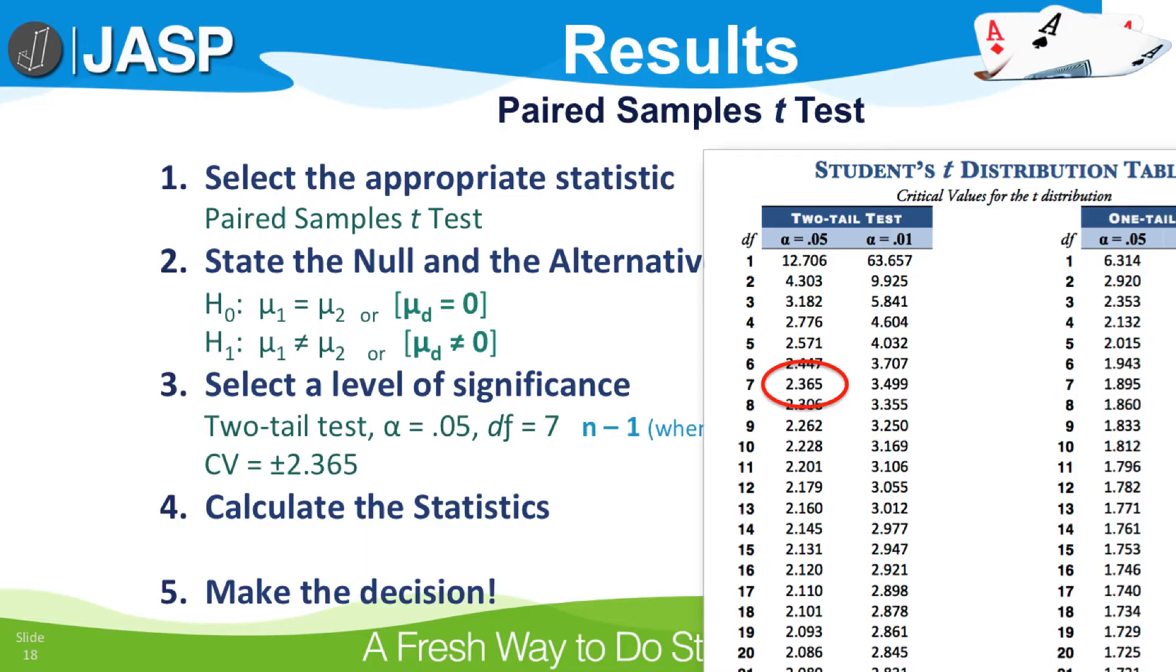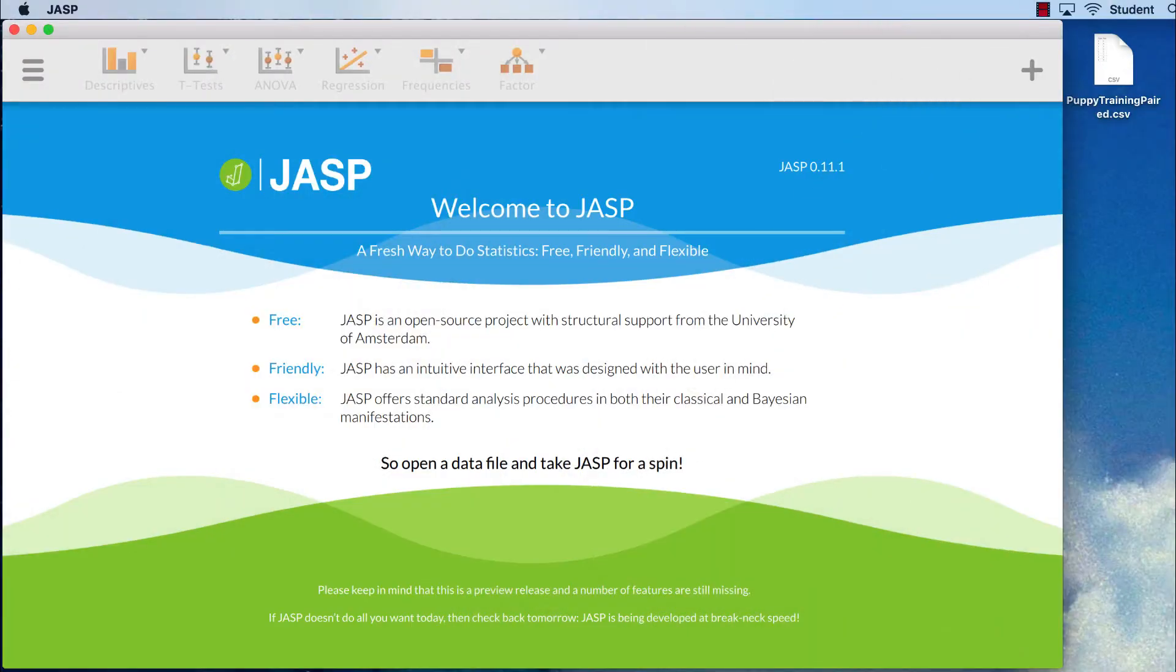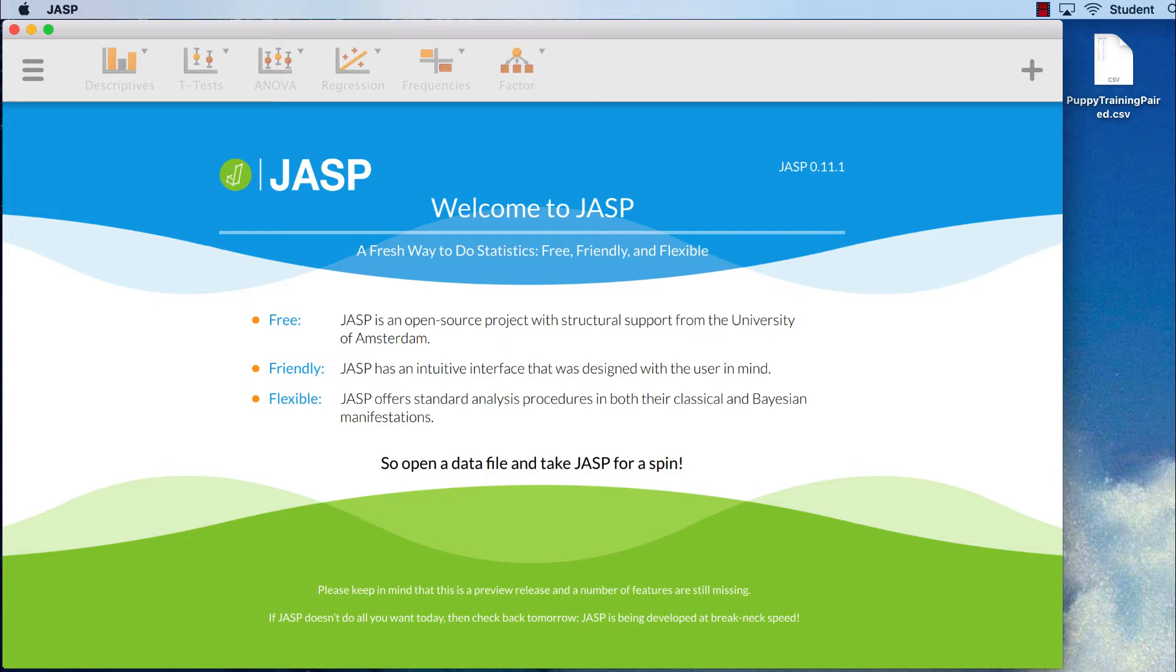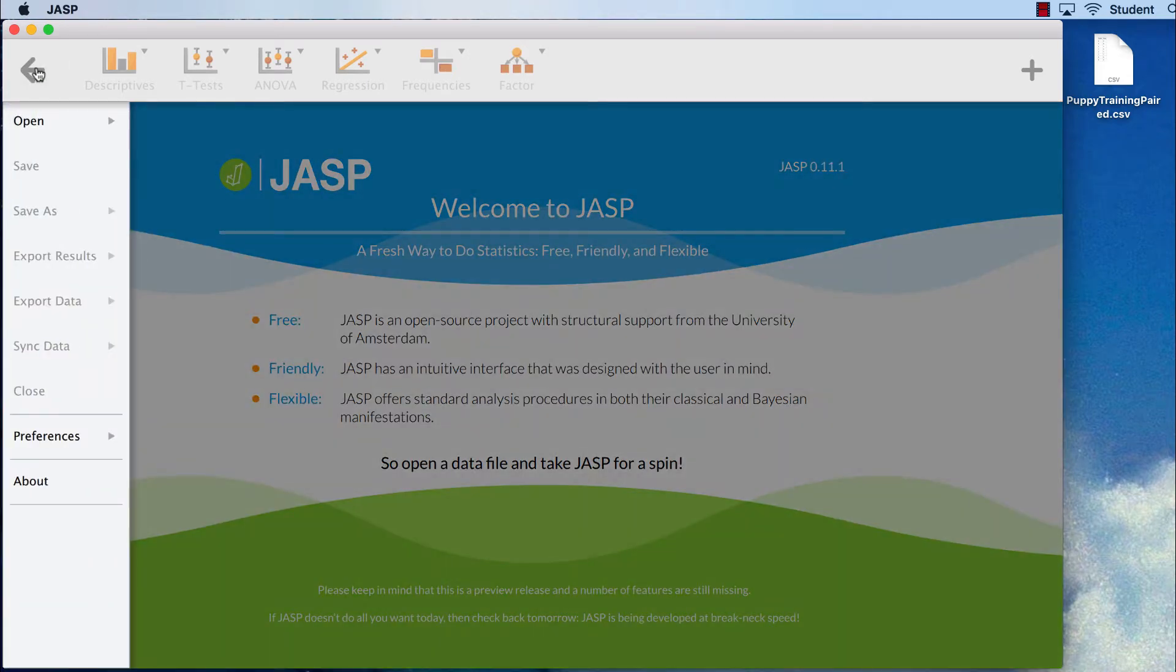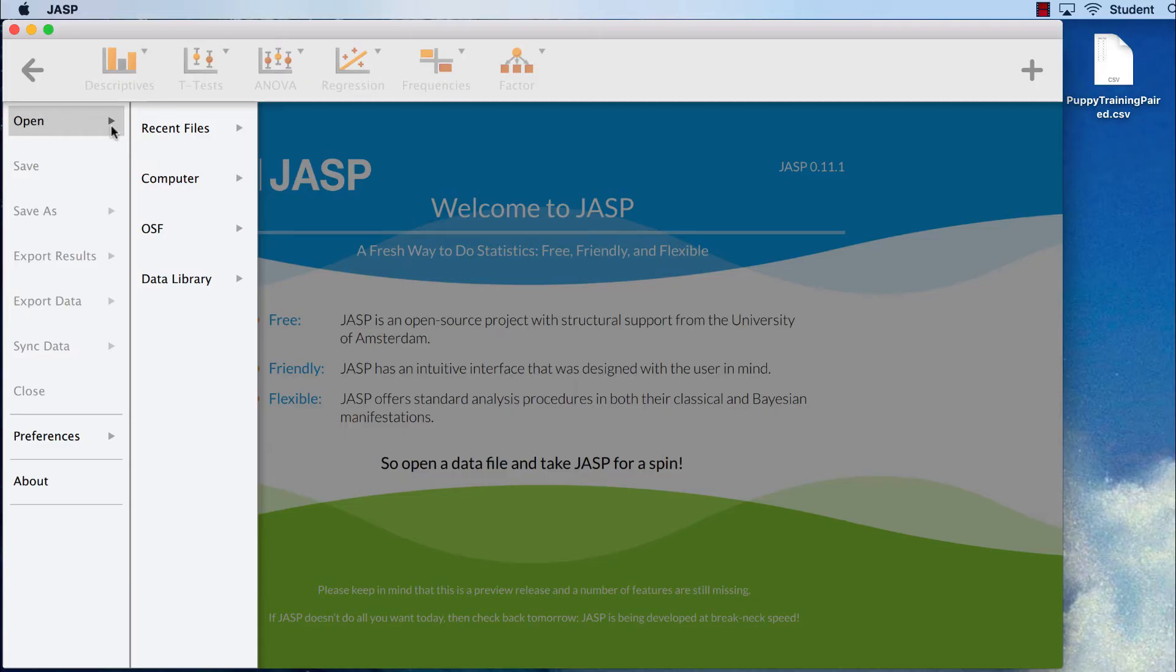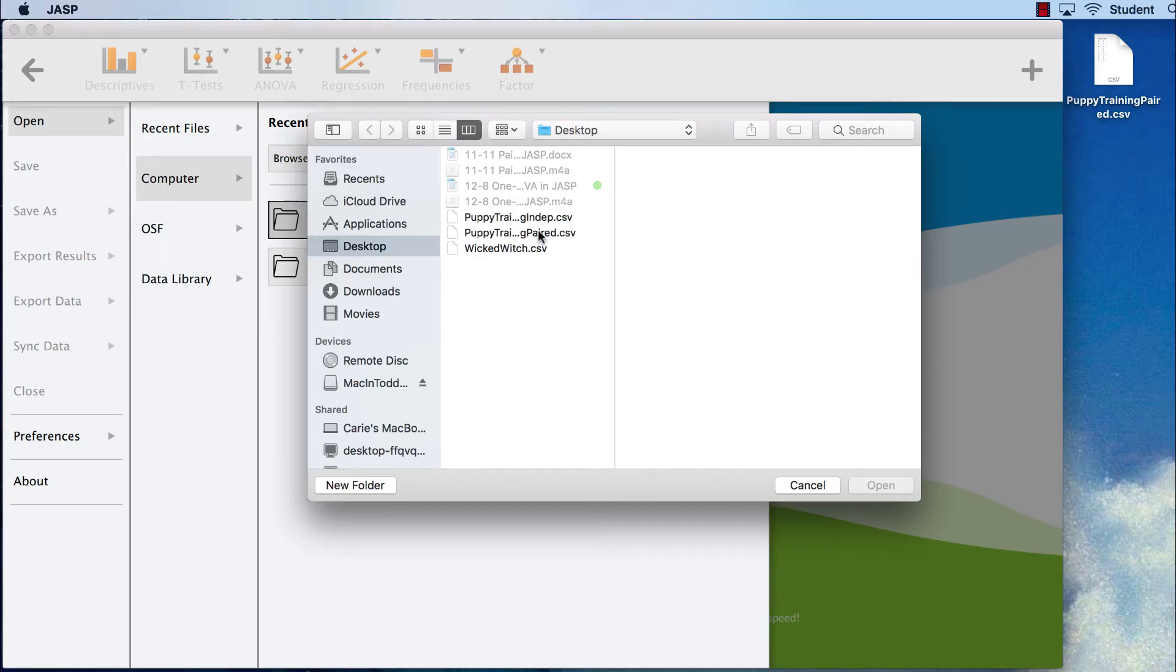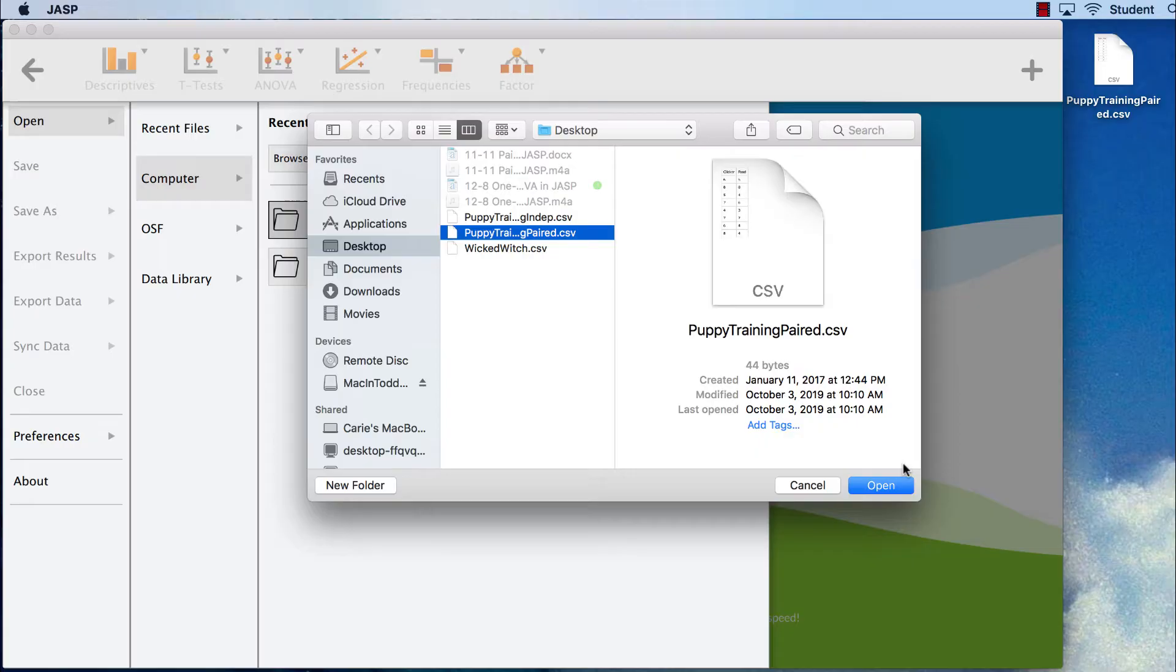Step four, calculate the statistics. So now we need to turn to JASP. Begin by placing the puppy training data on your computer desktop. We will open our data set by going to our main menu icon, Open Computer Desktop, PuppyTrainingPaired.csv, and then clicking Open.